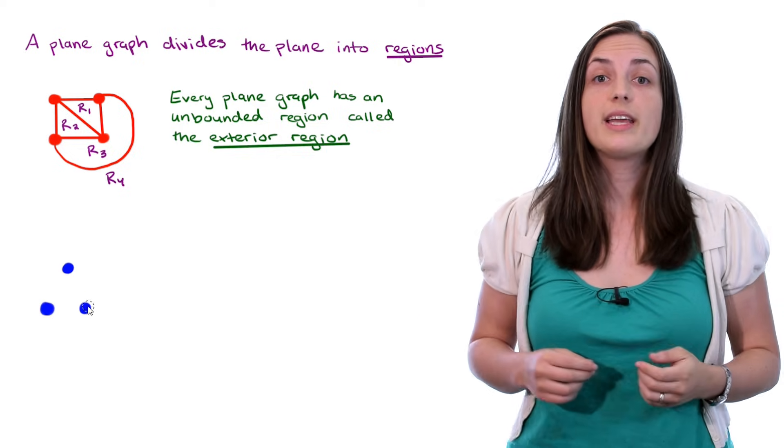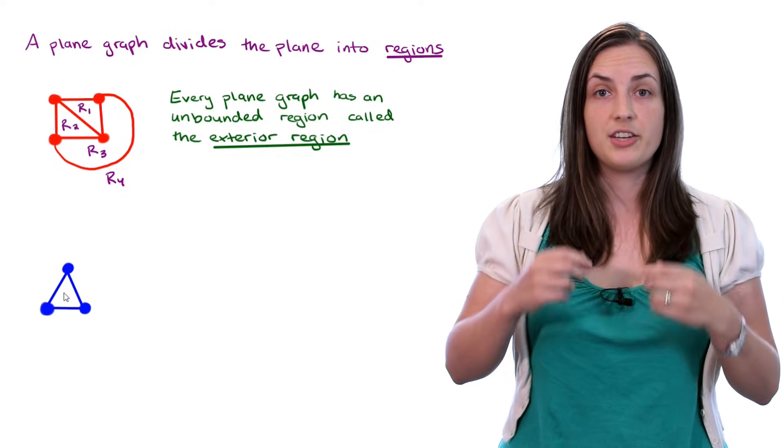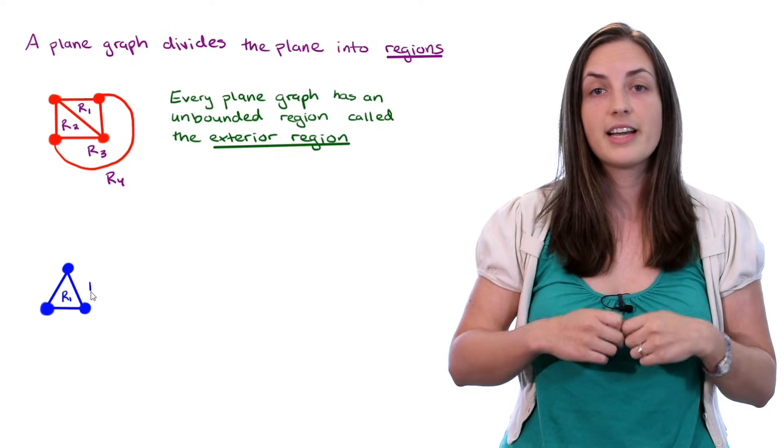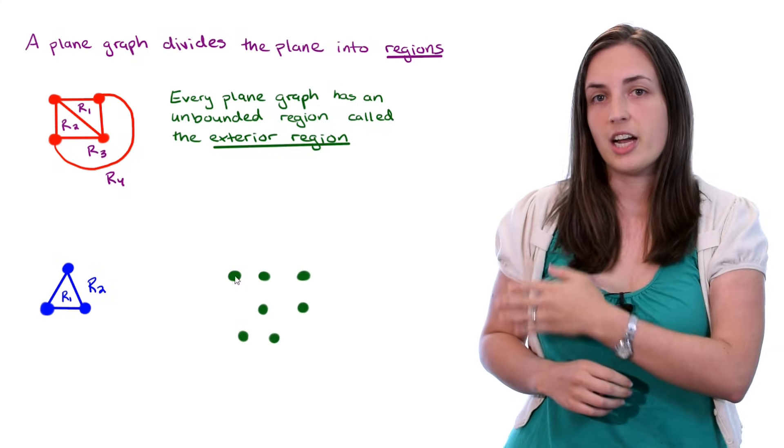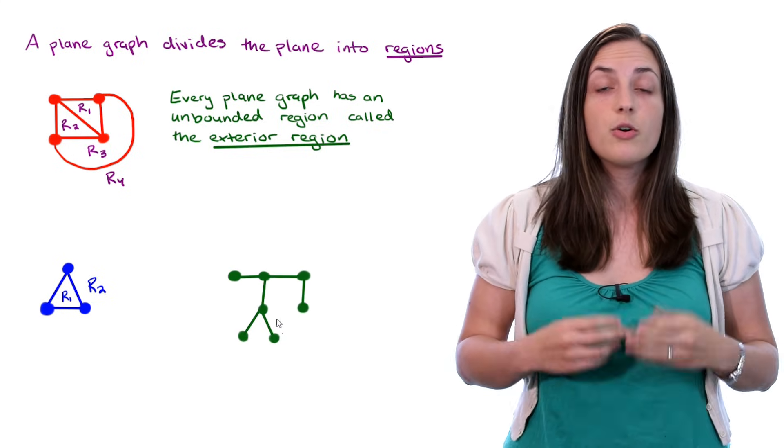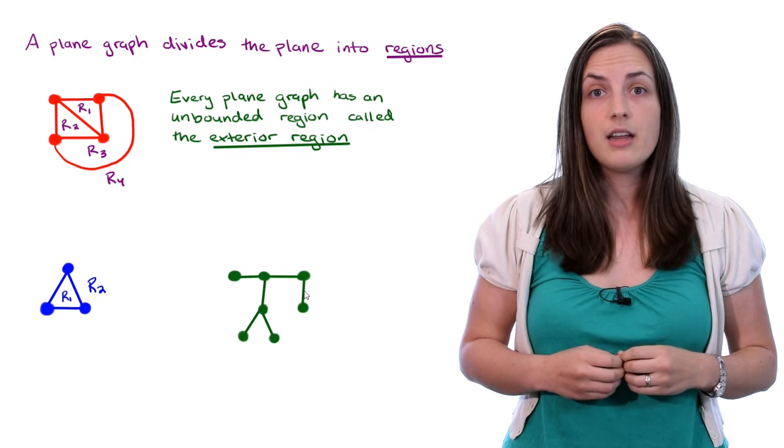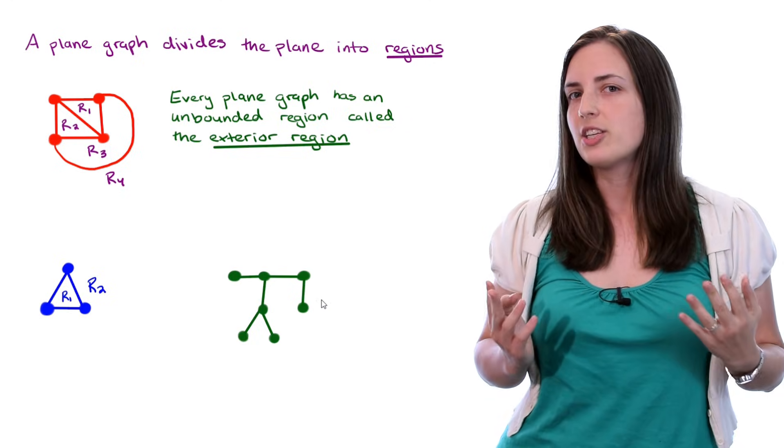Let's look at some more examples. So if we draw the triangle, we can see that it just divides the plane into two regions, the one inside the triangle and the one outside. If we draw another graph, say a tree on some number of vertices, we can see that it's easily drawn in the plane, and it also just has one region, which is the unbounded region. It's actually pretty straightforward to prove that every tree can be drawn as a plane graph and has only one region, which is the unbounded region.